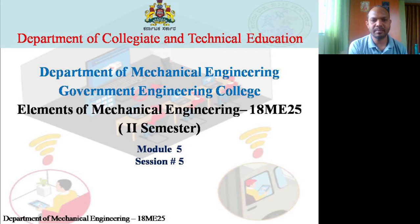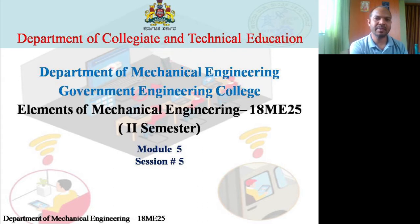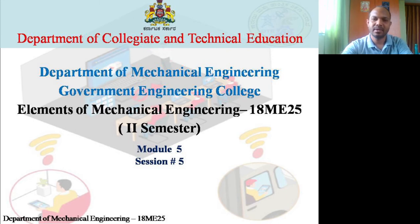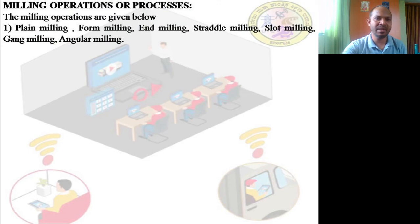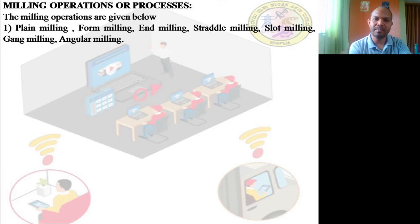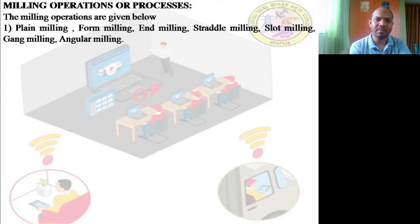Welcome to this session of Module 5. In the previous class we discussed different milling machines — vertical milling machines as well as horizontal milling machines. Now let us discuss the different types of milling operations that can be performed on these machines: plane milling, palm milling, end milling, straddle milling, slot milling, gang milling, and angular milling.